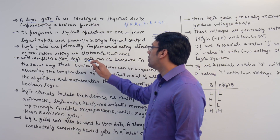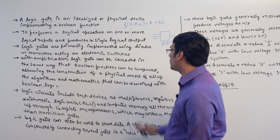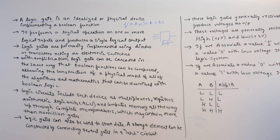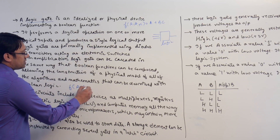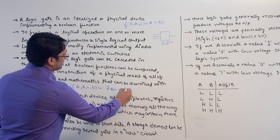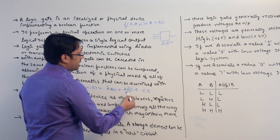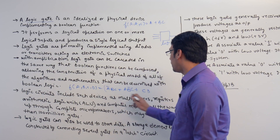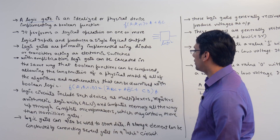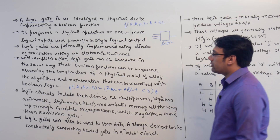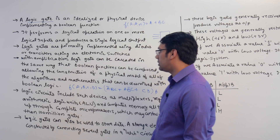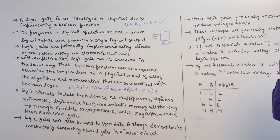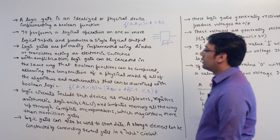With amplification, logic gates can be cascaded in the same way that Boolean functions can be composed, allowing the construction of a physical model of all algorithms and mathematics describable with Boolean logic. For example, a Boolean function of four variables such as a'bc + ab'c + cd can be implemented using a combination of logic gates, and we may need to amplify the current value of that logical circuit.